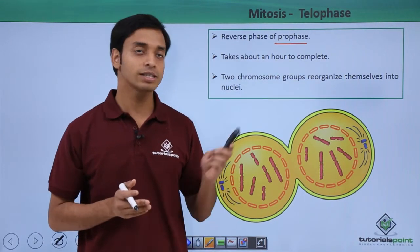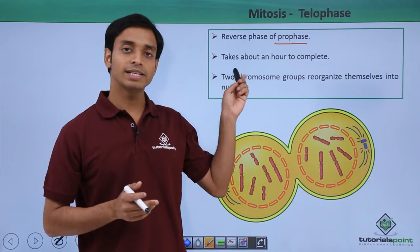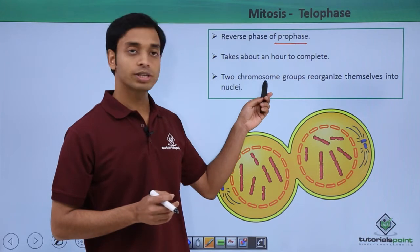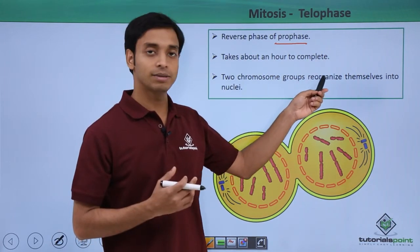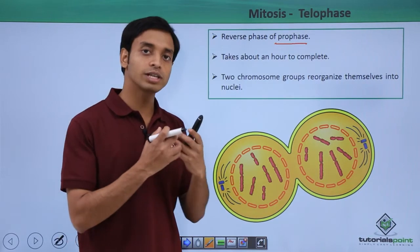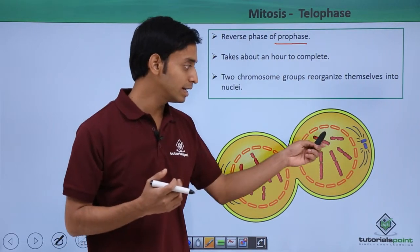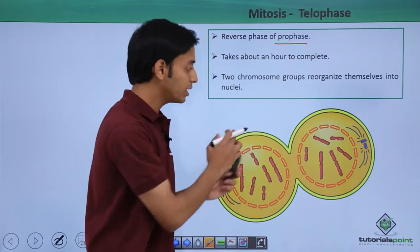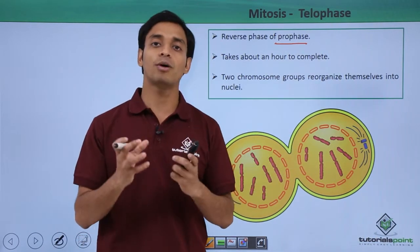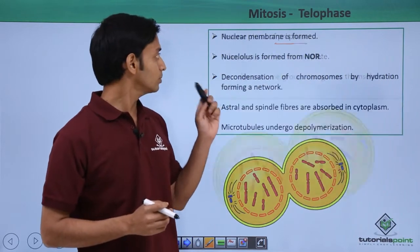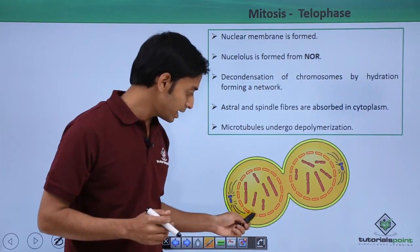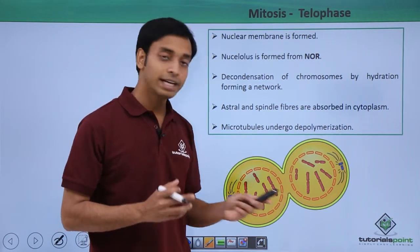This phase takes about an hour to be completed. The two sets of chromosomes start reorganizing themselves into nuclei. Here you can see the sister chromatids have separated, moved towards the poles, and now started reorganizing themselves to form a nucleus. The nuclear membrane also starts forming slowly so that it forms a proper nucleus.